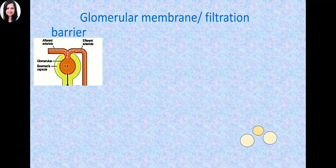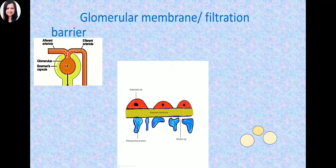GFR occurs across a glomerular membrane, also called the filtration barrier — the barrier that plasma has to traverse to reach the Bowman's capsule. This membrane consists of three parts: the endothelial cell layer, the basement membrane, and the podocyte cell layer. The fluid filtered from the glomerulus into the Bowman's capsule must pass through all three layers, which together make up the glomerular membrane.